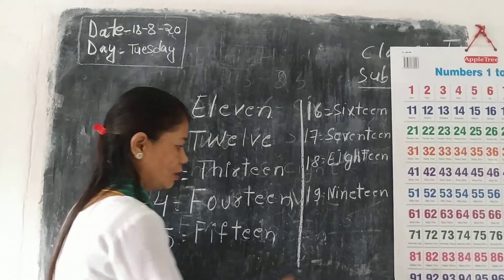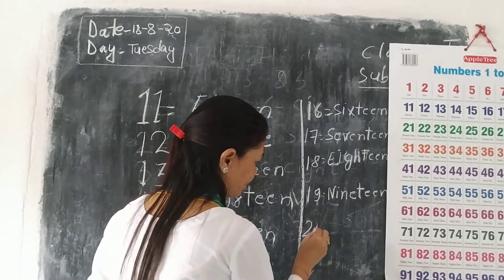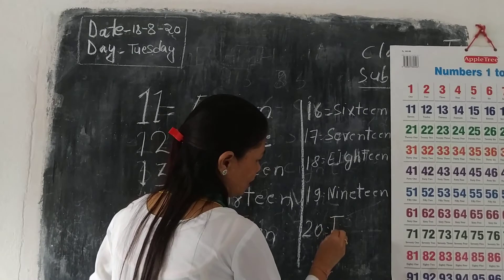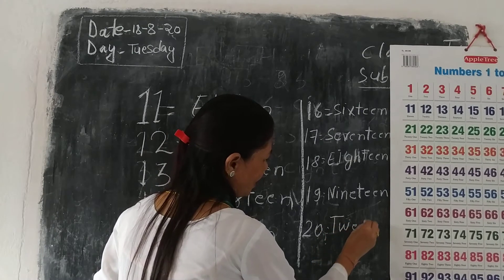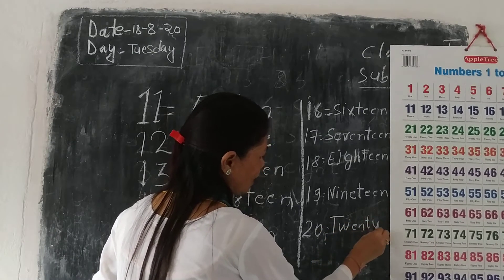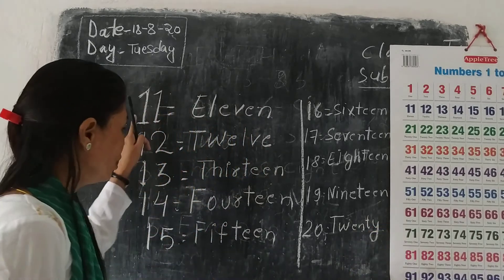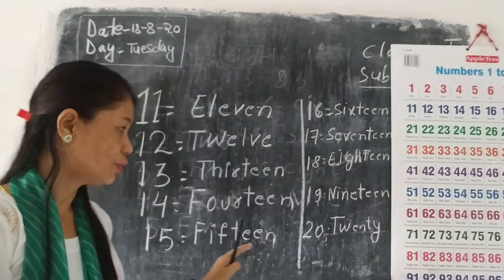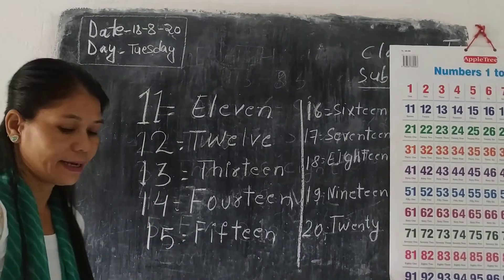And 20 — T-W-E-N-T-Y. 20. 11 to 20 is very important, so you will know. Then after again: